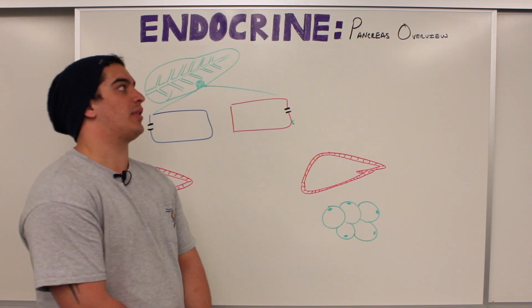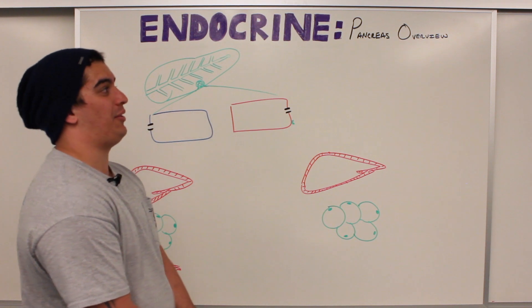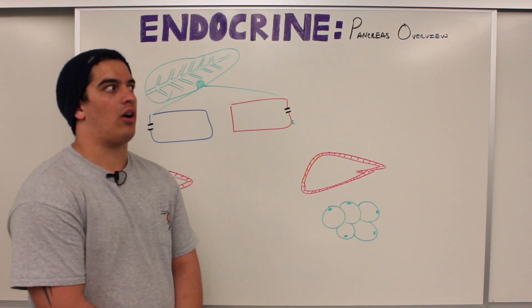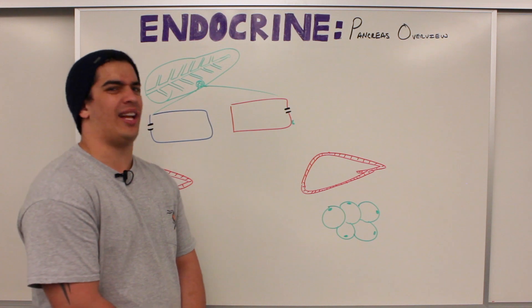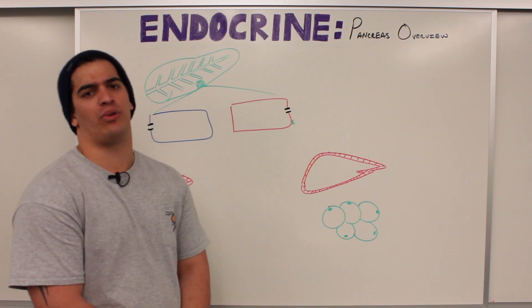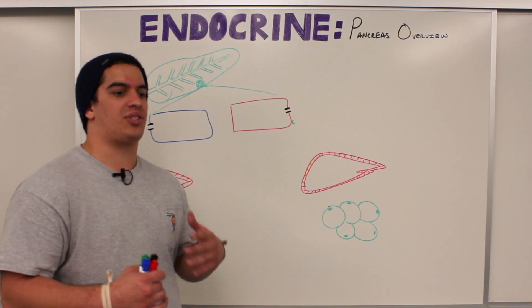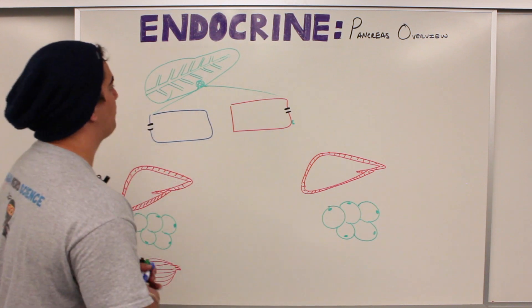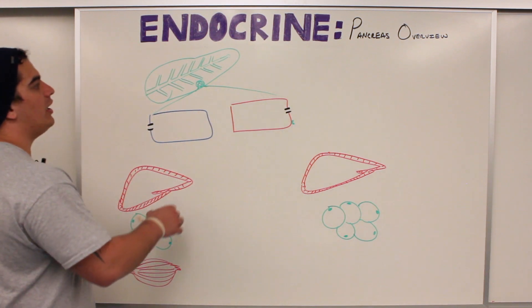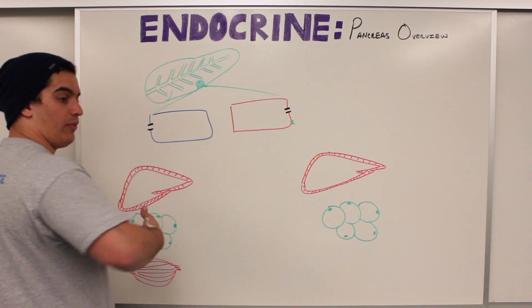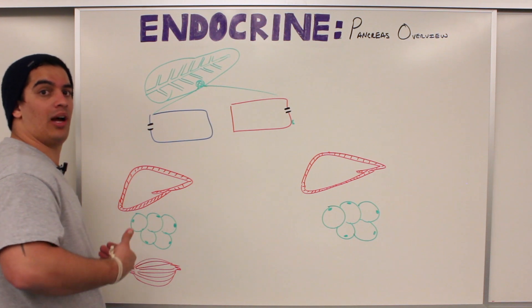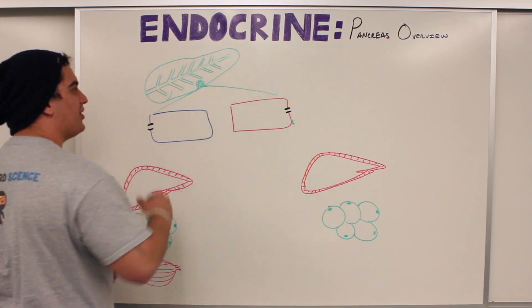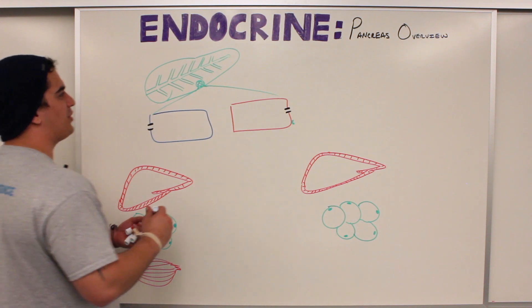In this video we're going to talk about the pancreas and get a quick overview. We previously covered insulin and glucagon in great detail, and now we want to do a brief review. The pancreas is located retroperitoneal, behind the stomach. What makes the pancreas a very interesting gland is that it's a heterocrine gland.